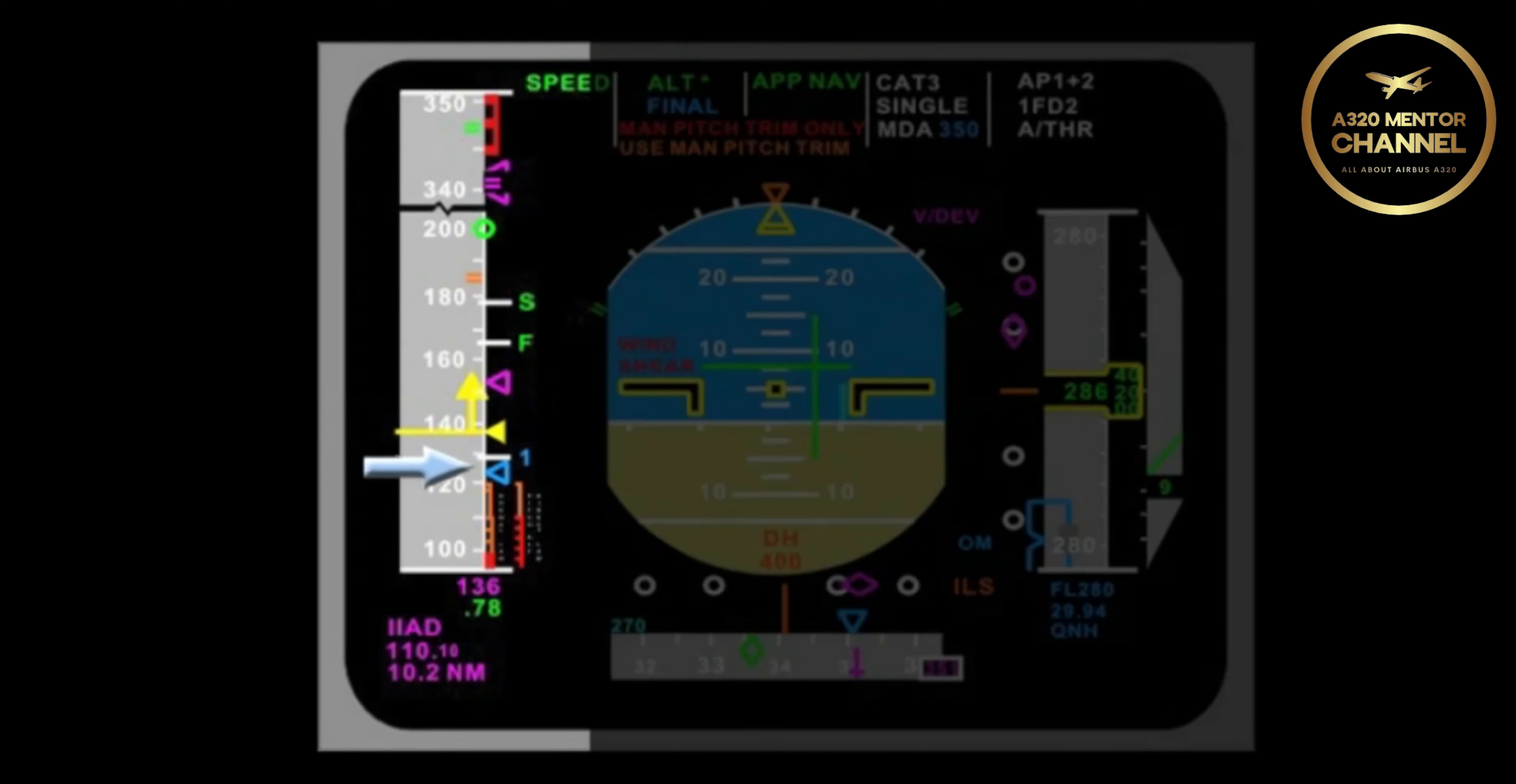For whatever reason, the pilot allowed the aircraft to decelerate through VLS and the speed got to the second or amber bumblebee portion of the speed tape. What does that represent? The second portion is called alpha-prot, which is alpha protection. If you get into alpha-prot, what are you, the pilot, commanding?